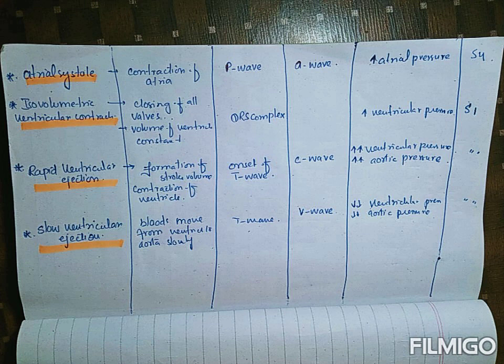The second phase is isovolumetric ventricular contraction. In this phase all valves are closed, so the volume of the ventricle is constant while ventricular pressure increases. The S1 heart sound is produced, and on the ECG the QRS complex follows the P wave — the P wave indicated atrial systole and the QRS complex denotes ventricular contraction.